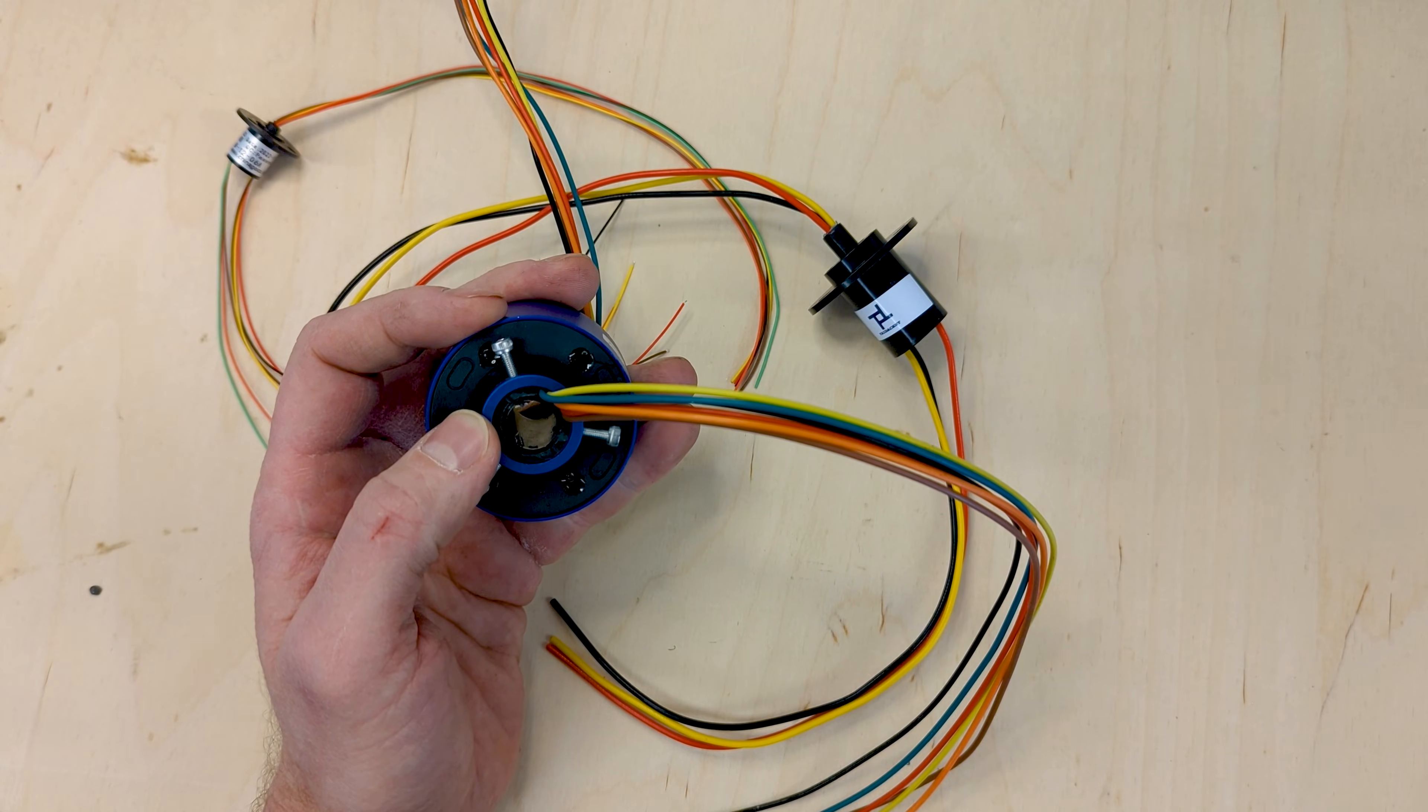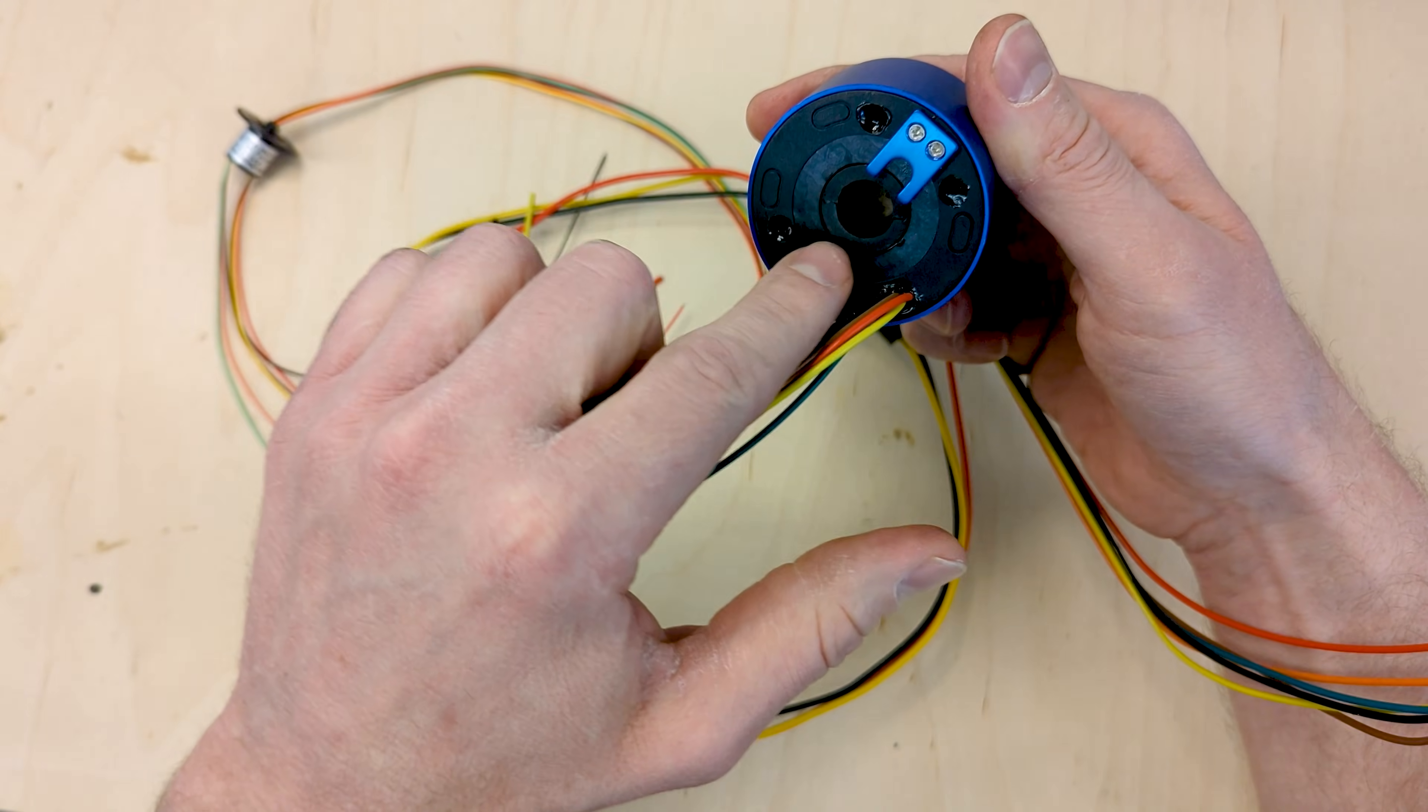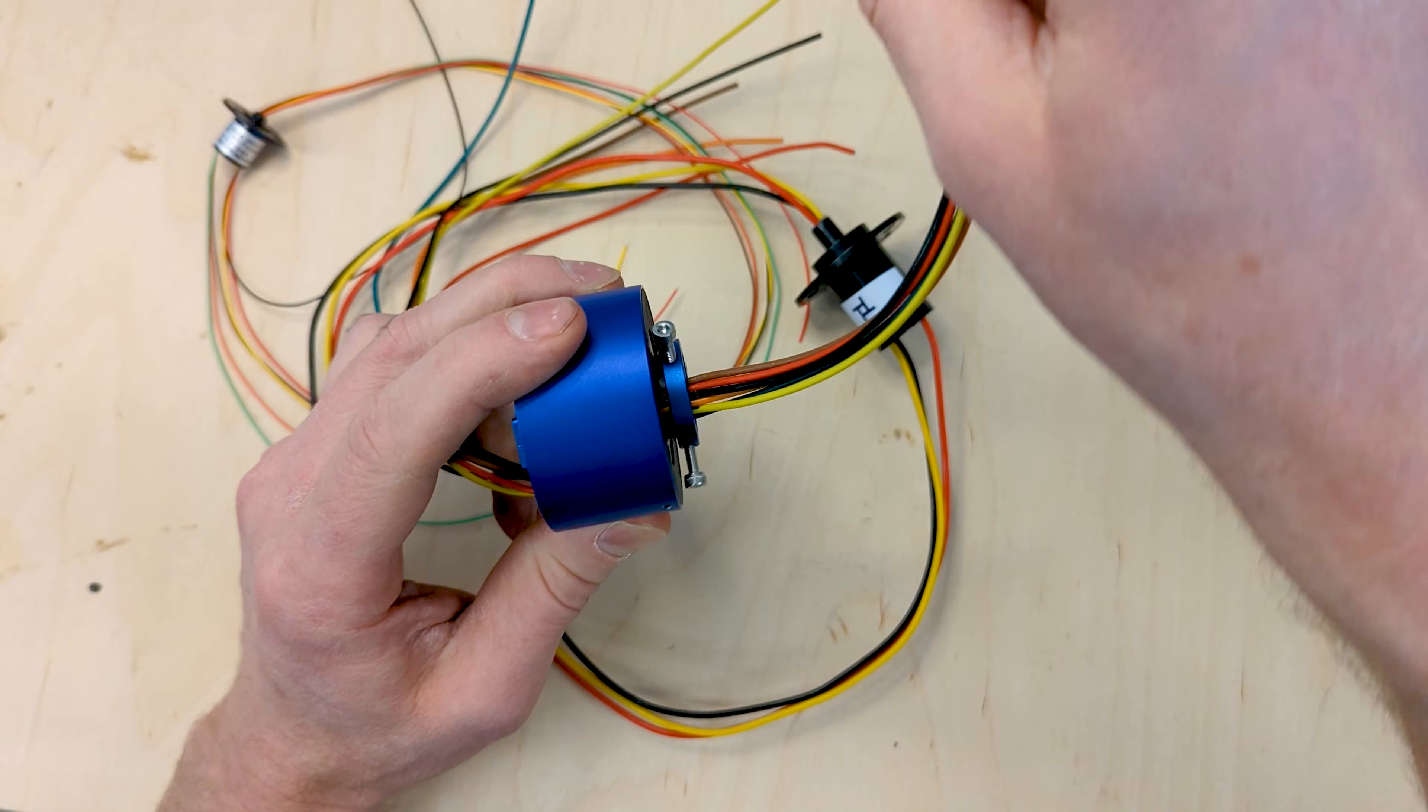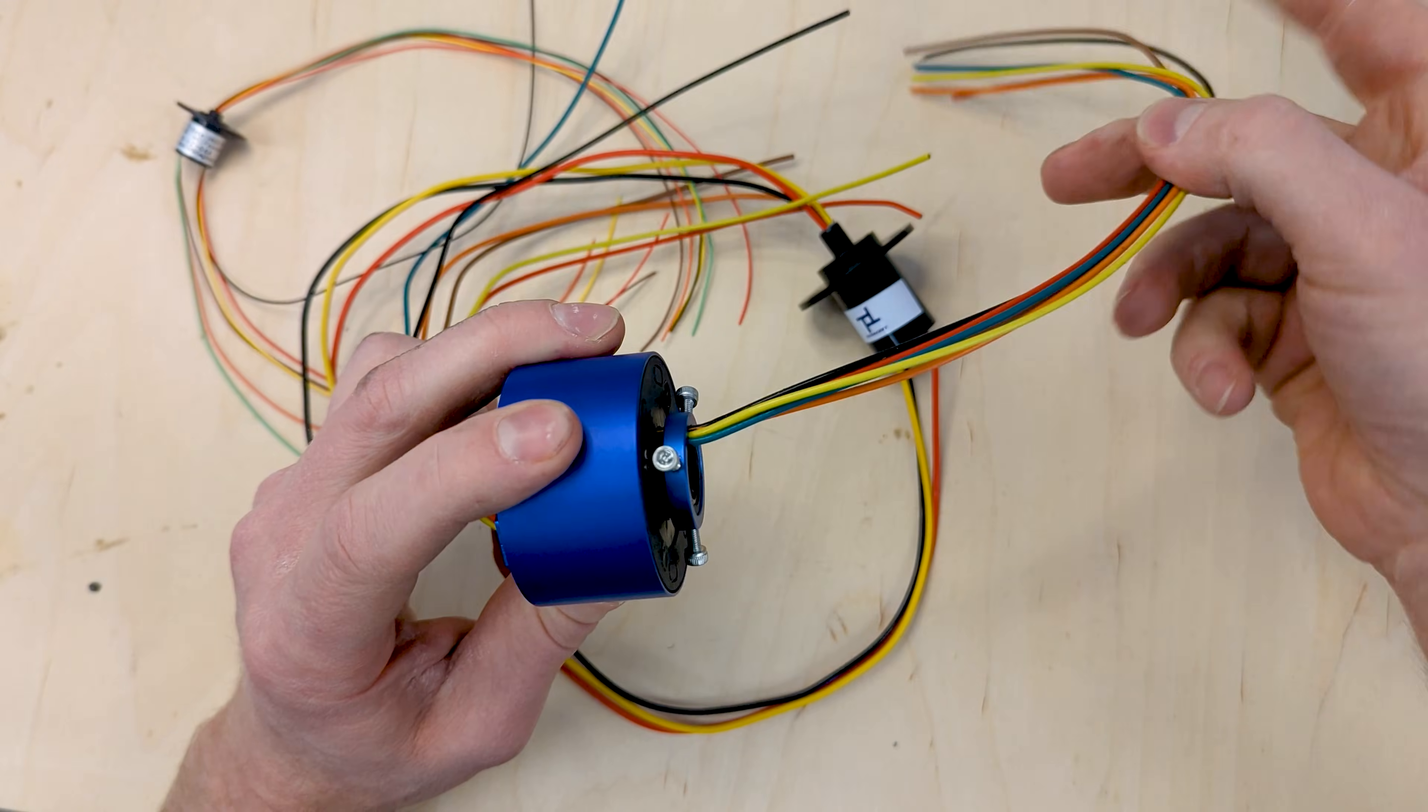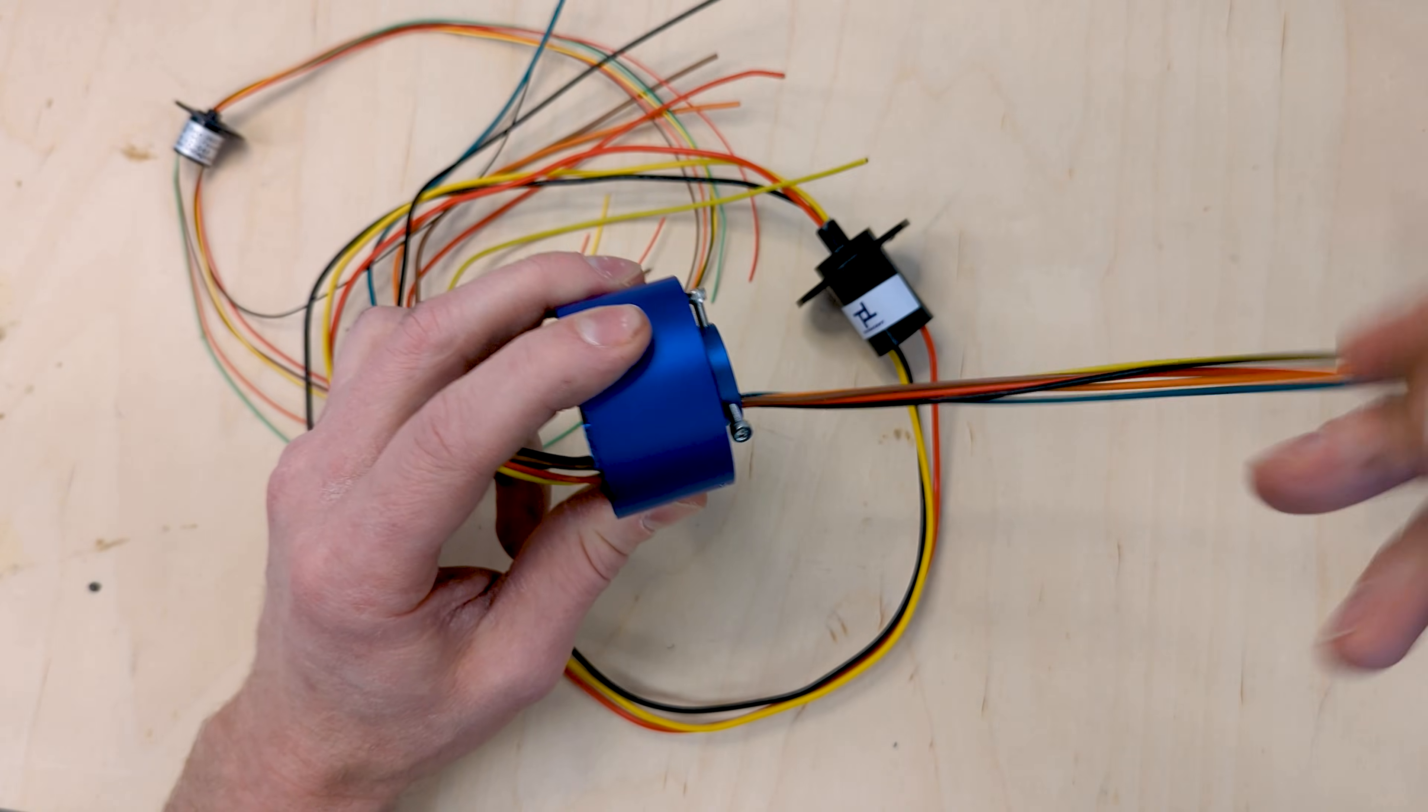It has three centering screws to make sure everything is set up. On this side, this is the stationary end. This end doesn't move, but the other end will move with the shaft or whatever else is turning the slip ring.